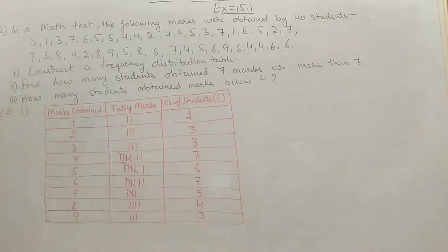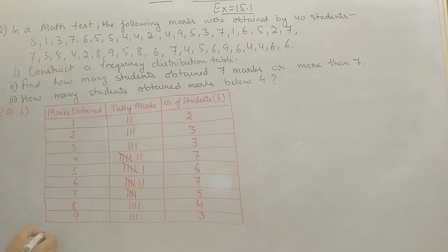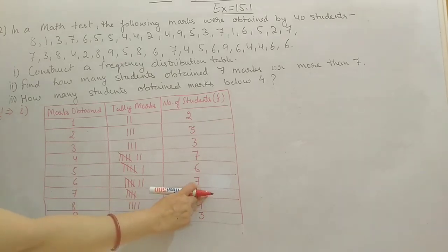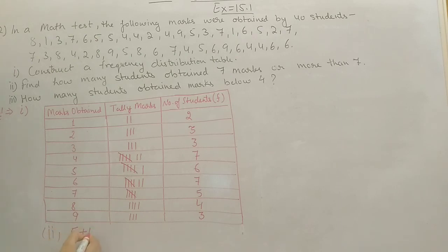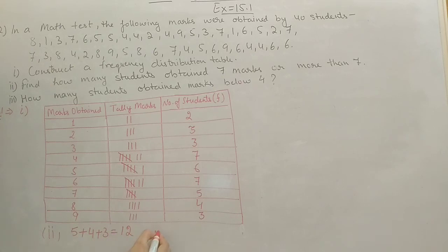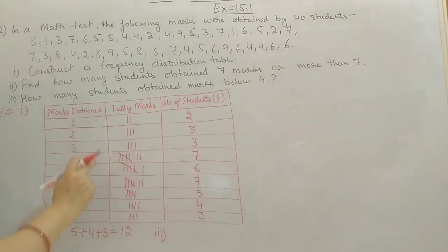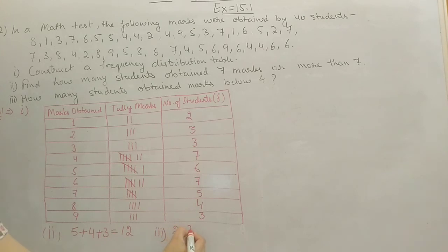Second question: find how many students obtained 7 or more than 7 marks. 7 marks — 5 students, 8 marks — 4 students, 9 marks — 3 students. Total: 5 plus 4 plus 3 equals 12. Third part: how many students obtained marks below 4? Below 4 means marks 1, 2, and 3. That is 2 plus 3 plus 3 equals 8 students.